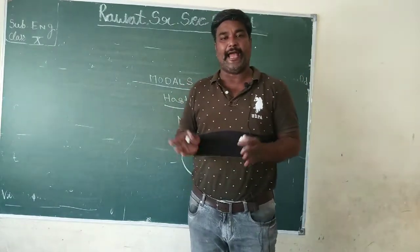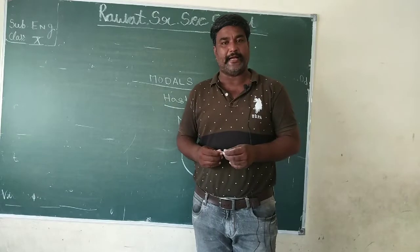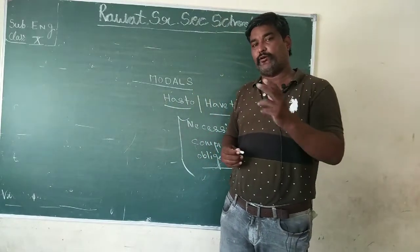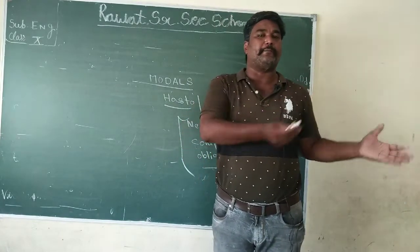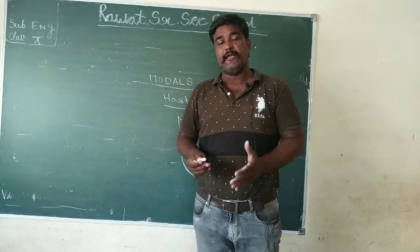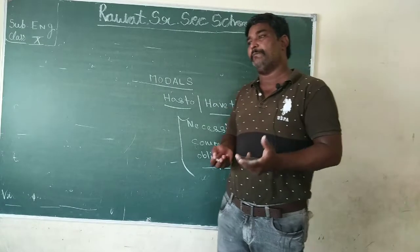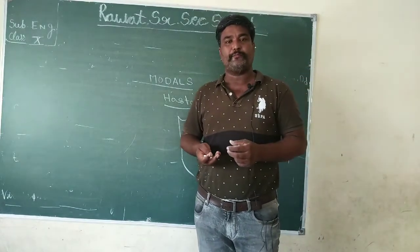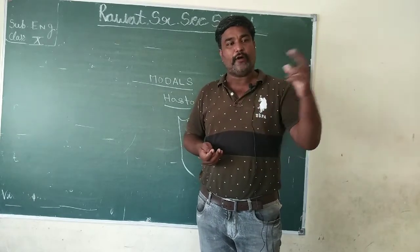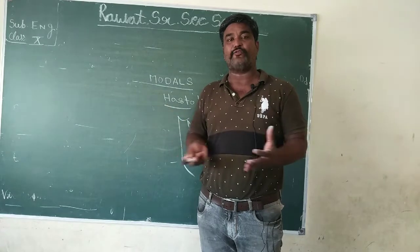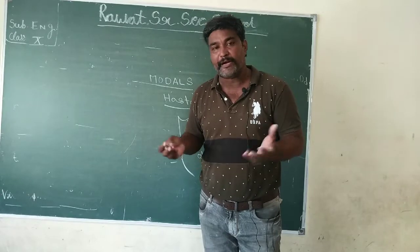'Has to' and 'have to' are for the present. Students should have the knowledge of 'has to' and 'have to' especially when we say 'I have to do this work' — meaning you don't want to do this work but you have to do it. For example: I am the only clerk in this office, I have to type all the letters. That is the compulsion and obligation.